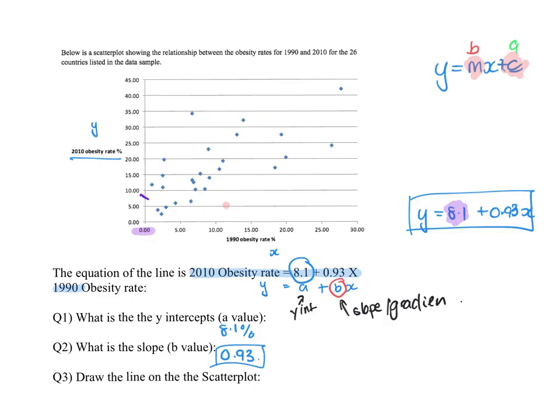Now I need another point so I can draw this straight line. What I'm going to do is use this 30 and pop it into the formula, because this 30 is like when x equals 30. So when x equals 30, I'd have y equals 8.1 plus 0.93 times 30. We'll do that on our calculator, so I get 36.